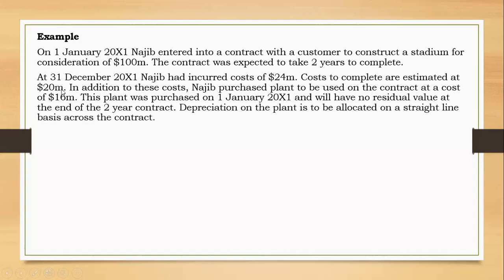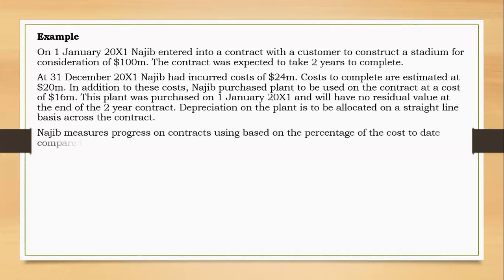Costs to complete are estimated at 20 million dollars. In addition to these costs, Nagy purchased plant to be used on the contract at a cost of 16 million dollars. This plant was purchased on the 1st January 20X1 and will have no residual value at the end of the contract. This question is a bit complicated because it has also included the cost of the plant. The depreciation on the plant is to be allocated on a straight-line basis across the contract.